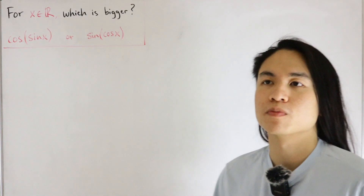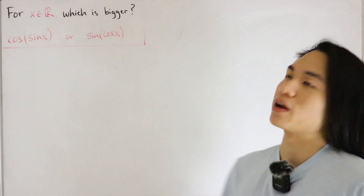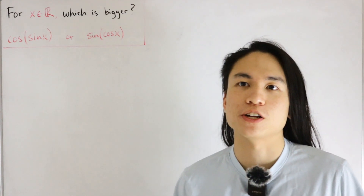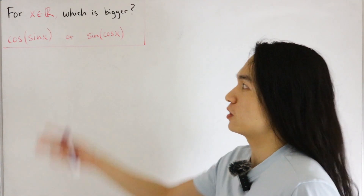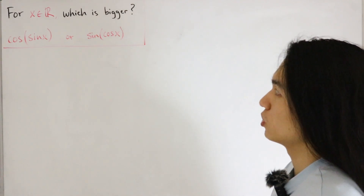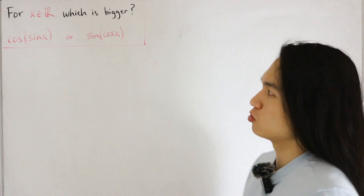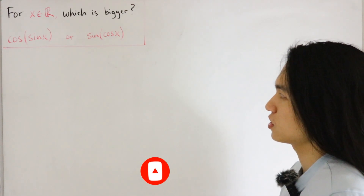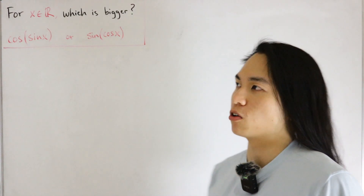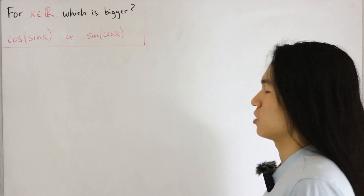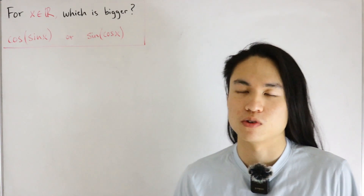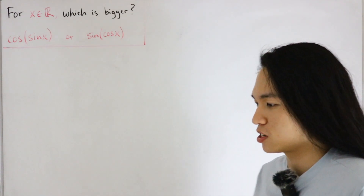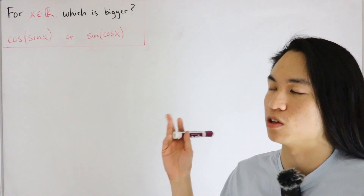Welcome back to another video. Today, instead of the usual number comparison, we're actually comparing functions. So of course, being functions, we have to add the appropriate notations. For all x in the reals, which of the following is bigger: the two functions we're going to compare are both trigonometric functions — cosine of sine of x, and sine of cosine of x. You can just plug these into a calculator to see which is bigger, but of course we want to actually prove this.